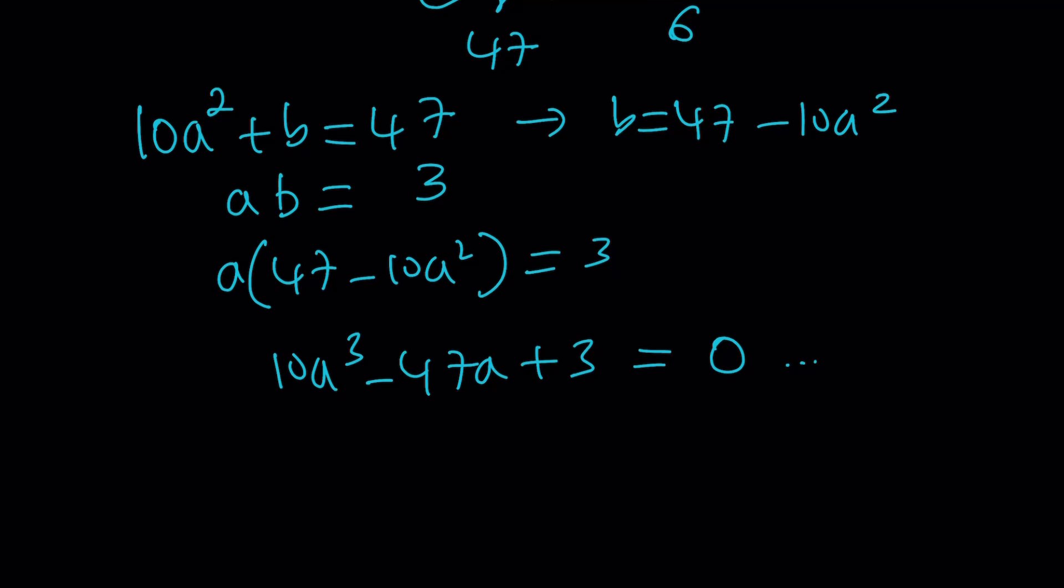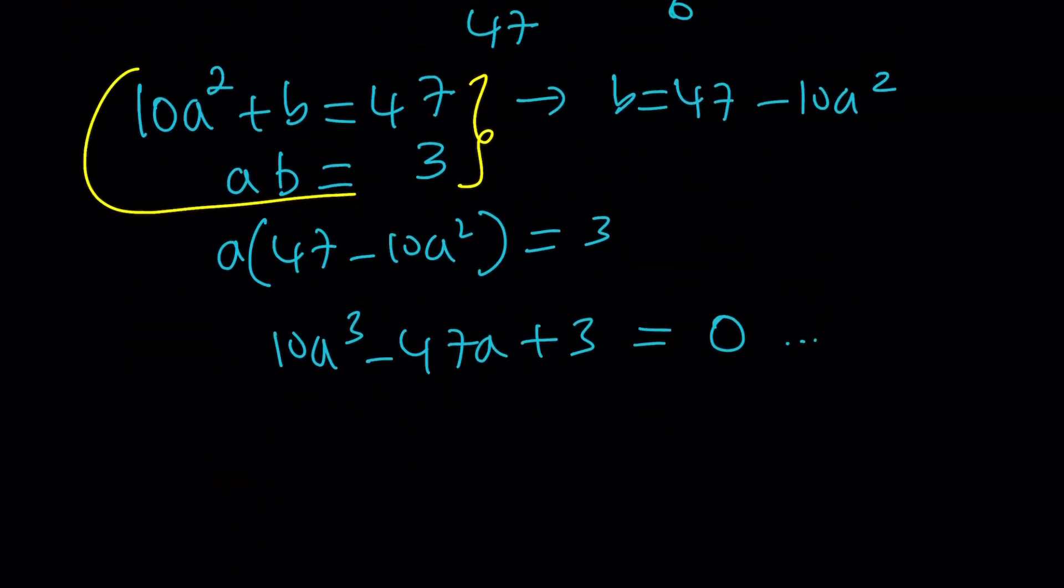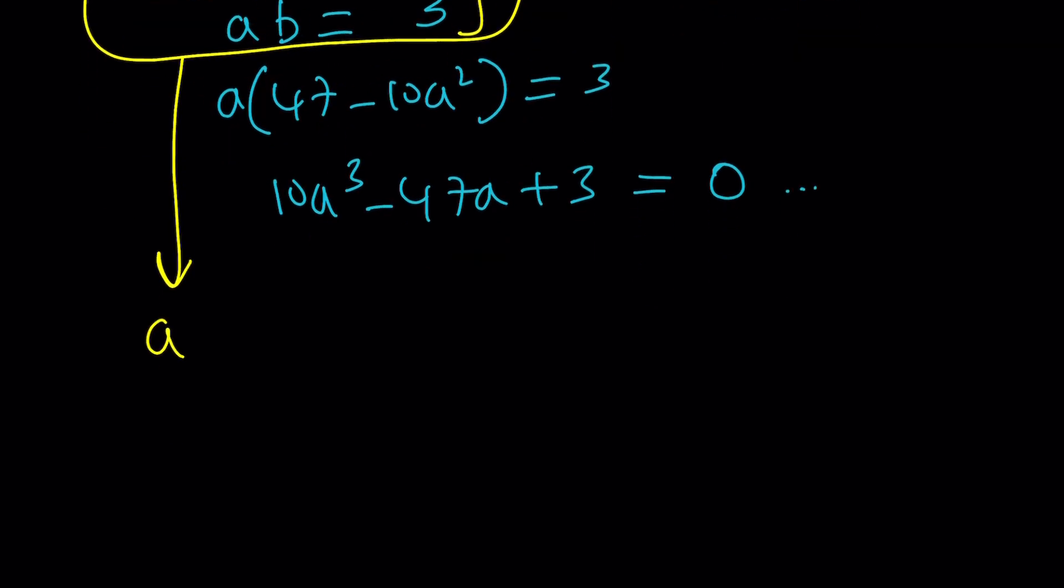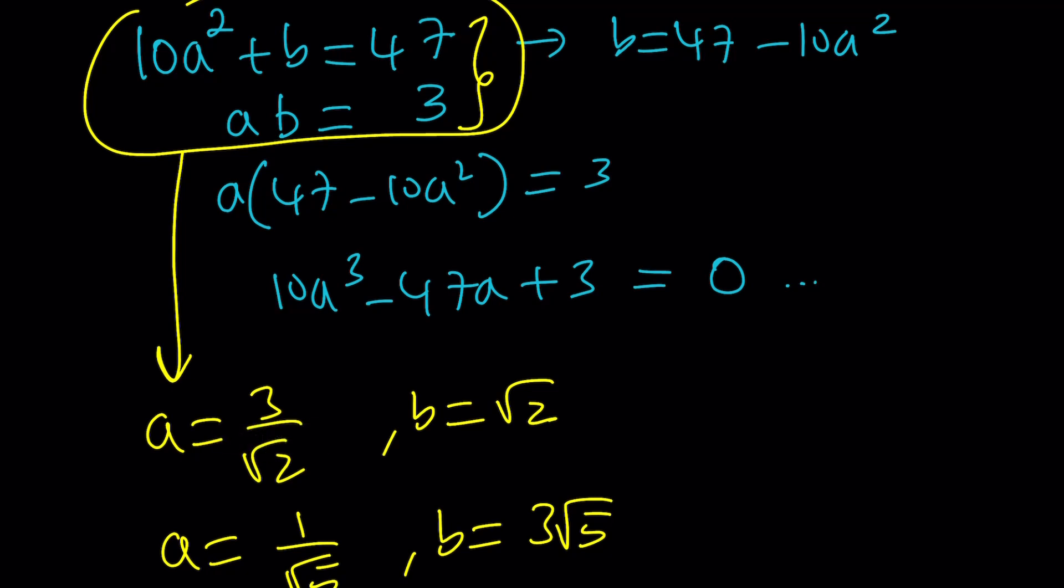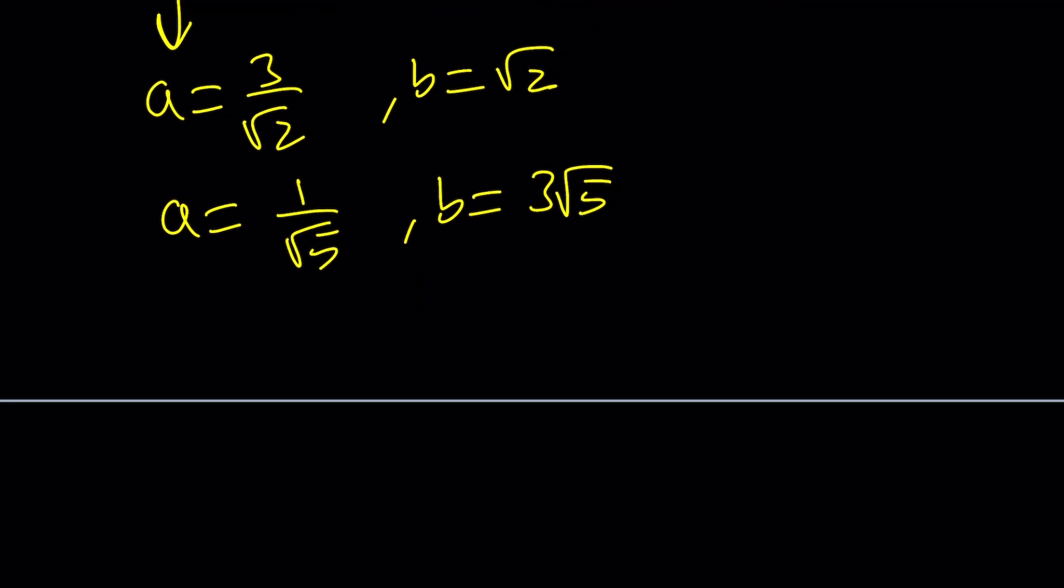This system has two solutions that are positive. Of course, I want a and b both to be positive because our expression is originally positive. So from here, we get the following values for a and b: a is 3 over √2 and b is √2, or a can be 1 over √5 and b can be 3√5. These are unexpected because we said that a and b are supposed to be rational, right? These numbers are not rational at all, but it's okay.